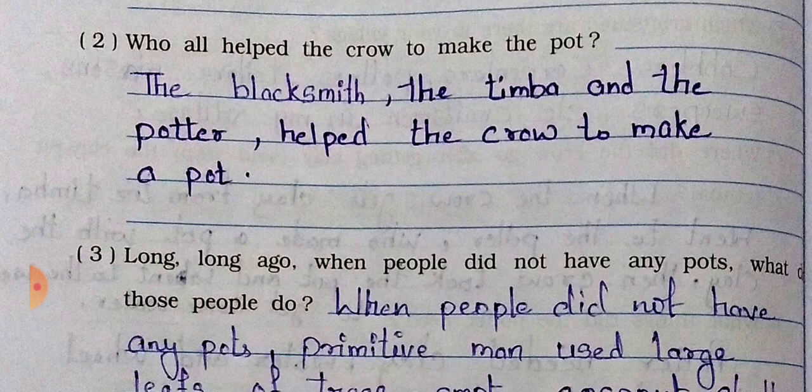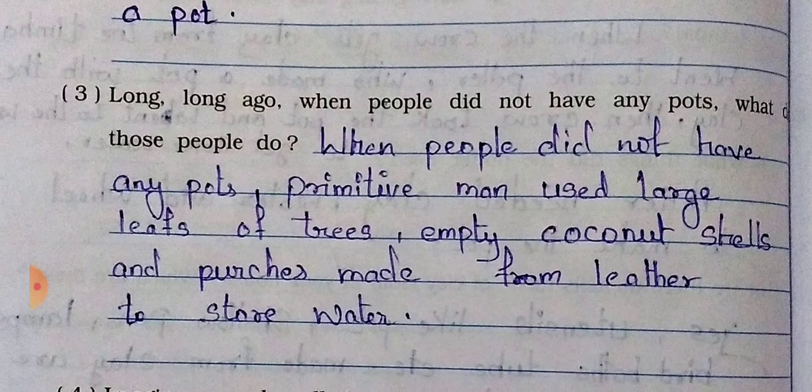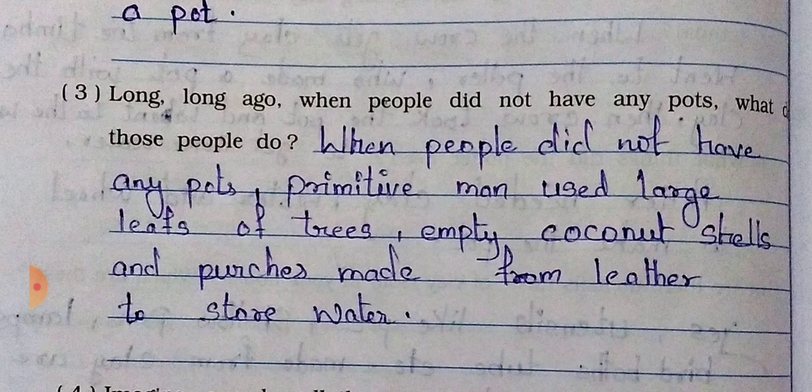Question number two: Who all helped the crow to make the pot? Answer: The blacksmith, the timber, and the potter helped the crow to make a pot. Question number three: Long, long ago, when people did not have any pots, what did those people do?